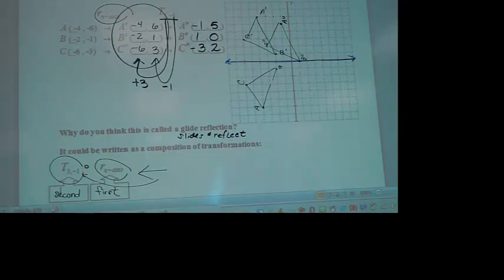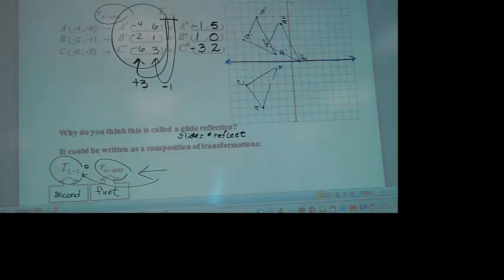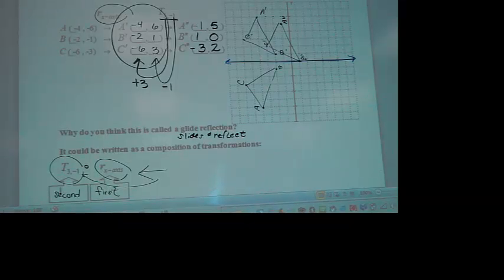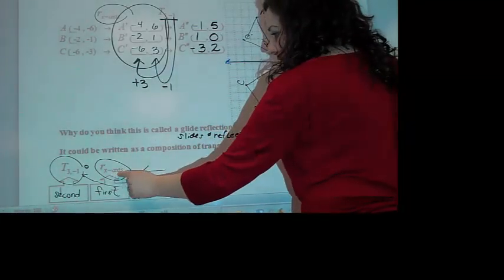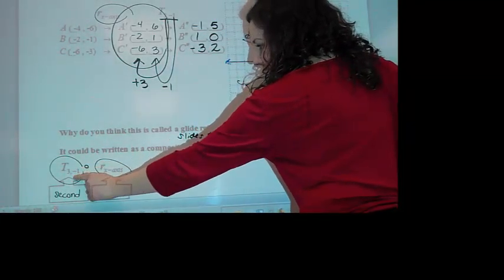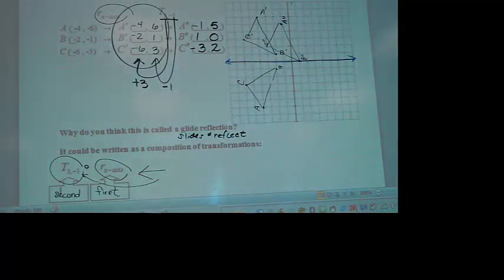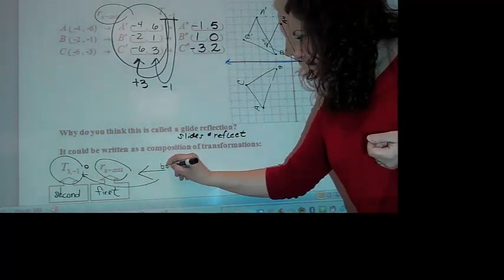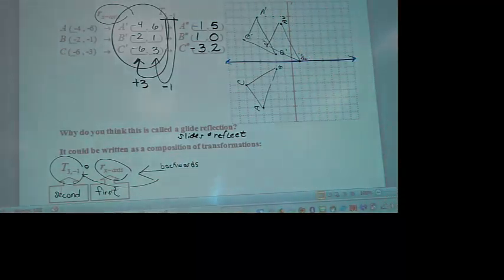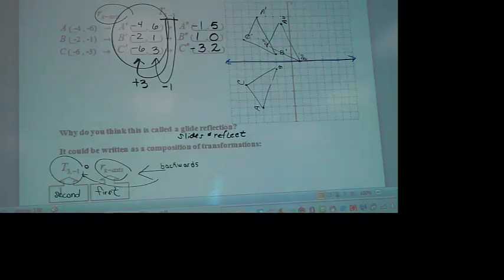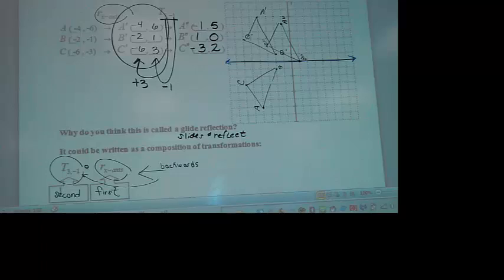So this is just kind of an introduction to looking at that open circle. It doesn't mean multiply. It's a composition. And it's the way we kind of put them together and make it so that we don't have to put all these written out with all the coordinates. We could ask you this type of a question, and you should know that you work backwards, and you reflect first over the x-axis and then translate the reflection or the image.